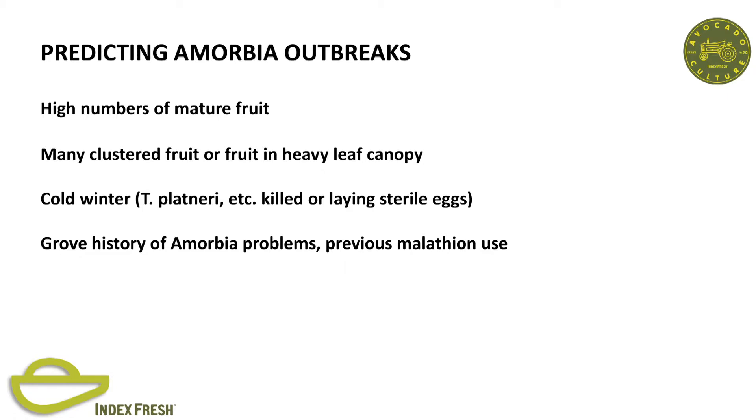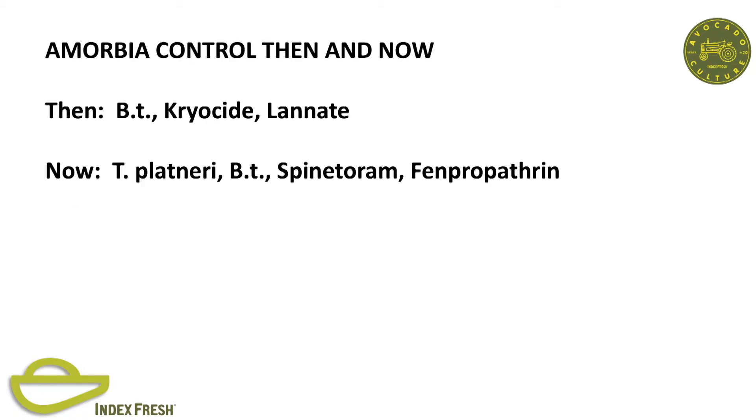Predicting Amorbia outbreaks: similar—high numbers of fruit, clustered fruit, cold winters, grove history, previous malathion use. Same controls for Amorbia as for looper.